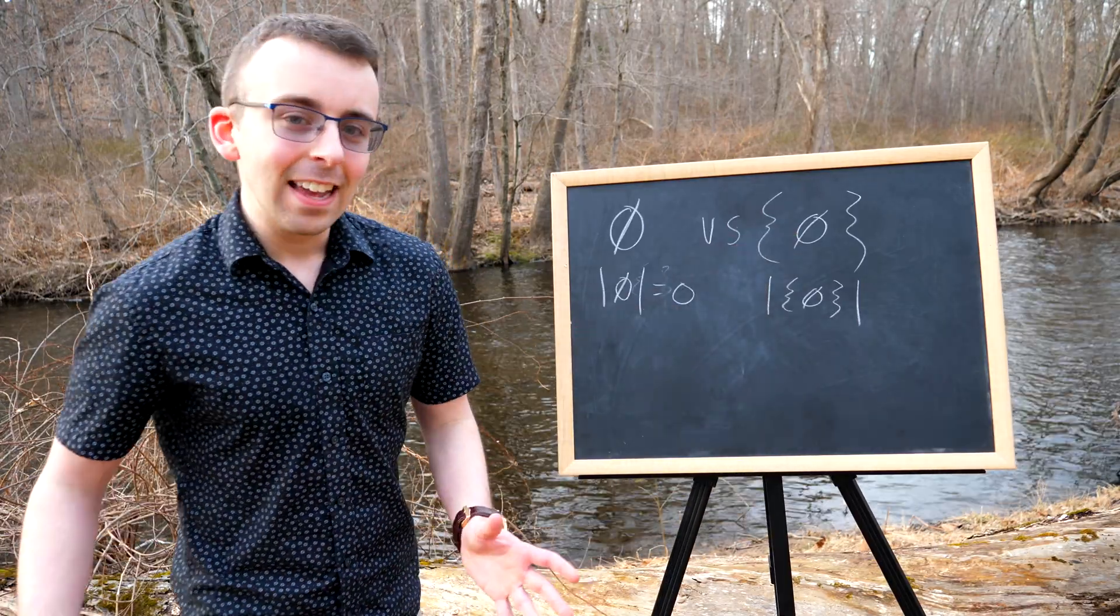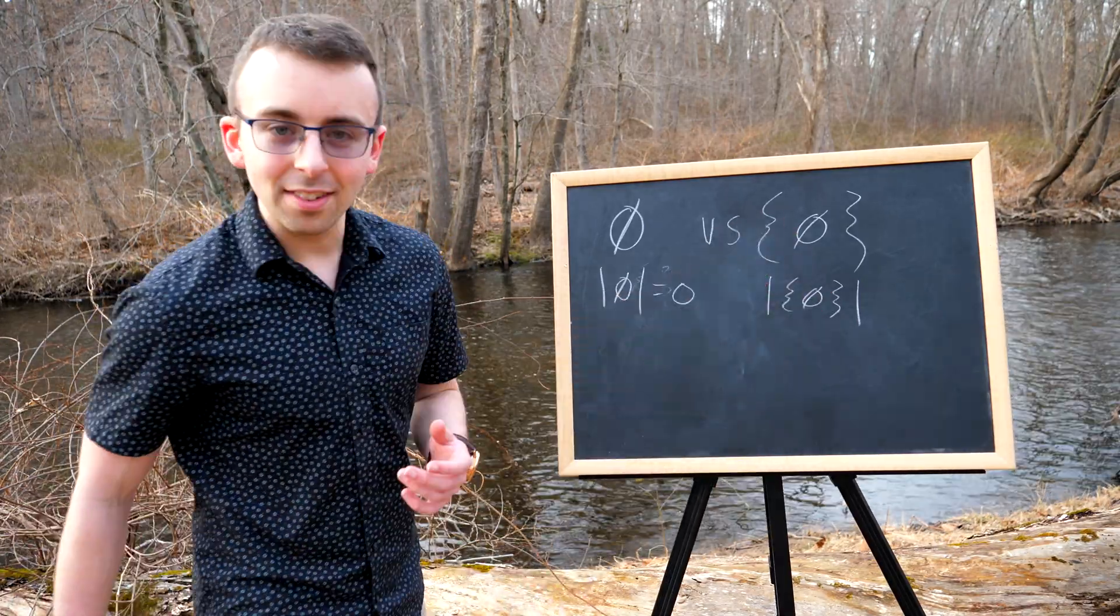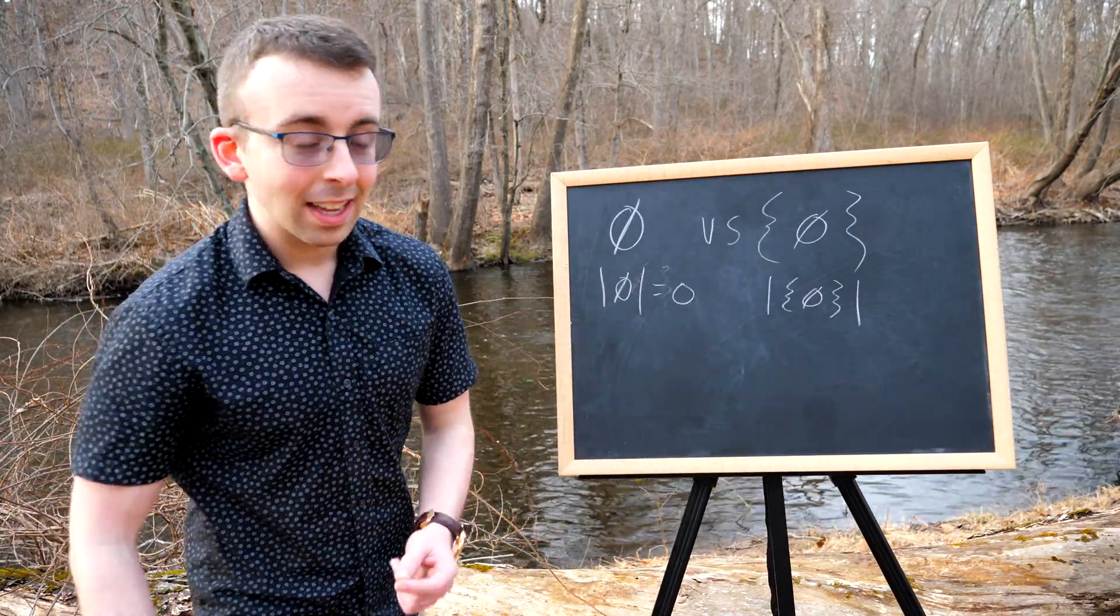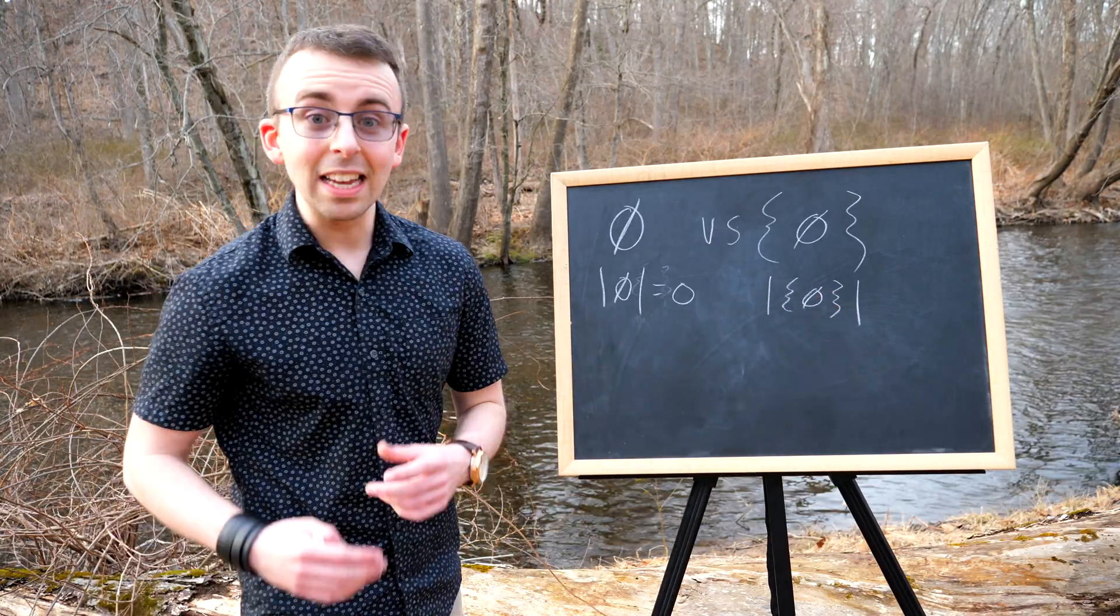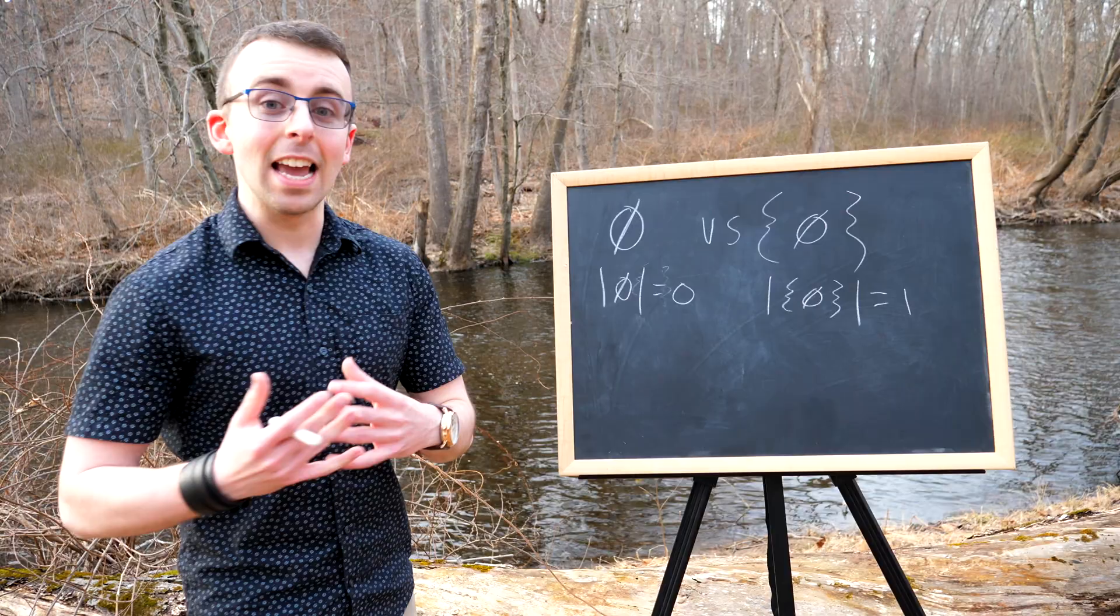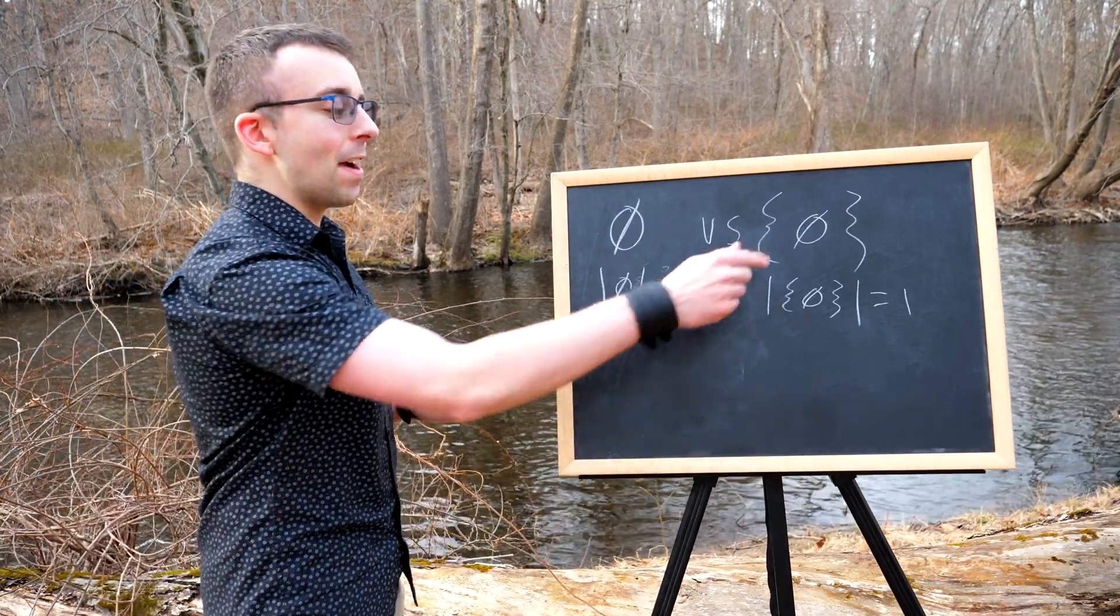It's not like you're just adding nothing to this set when you include the empty set in it. The empty set is an element, so the cardinality of this set is one. It has one element, the empty set. The empty set is a perfectly valid element.